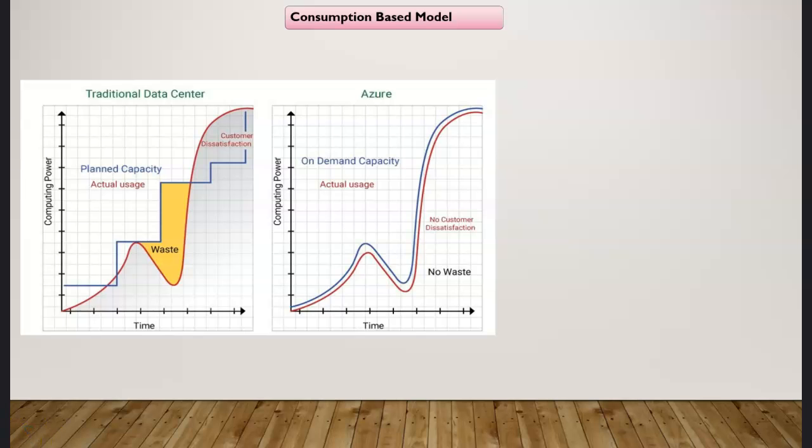So this kind of touches on the consumption-based model, paying only for what you're using and when you're using it. With the consumption-based model, we have no more upfront investment and we no longer have to buy servers incrementally like we used to buy in the blue line in the image on the left side, which is our traditional data center. Instead we can use the pay-as-you-go model.